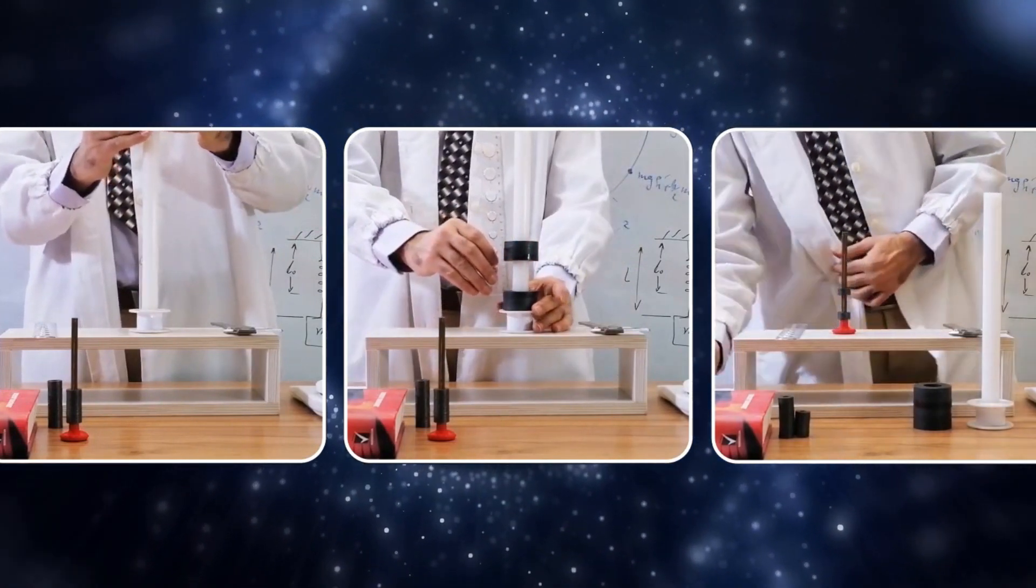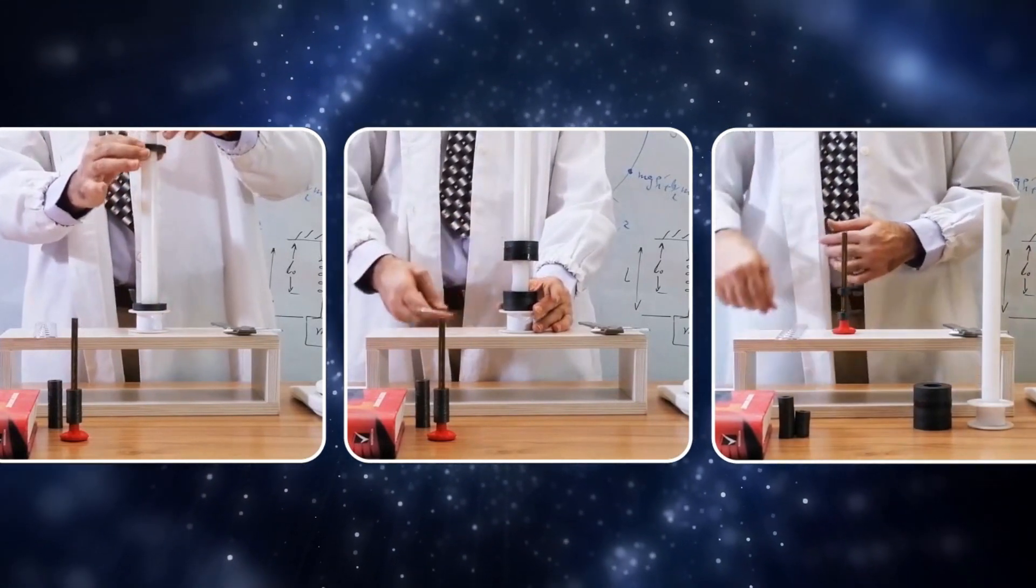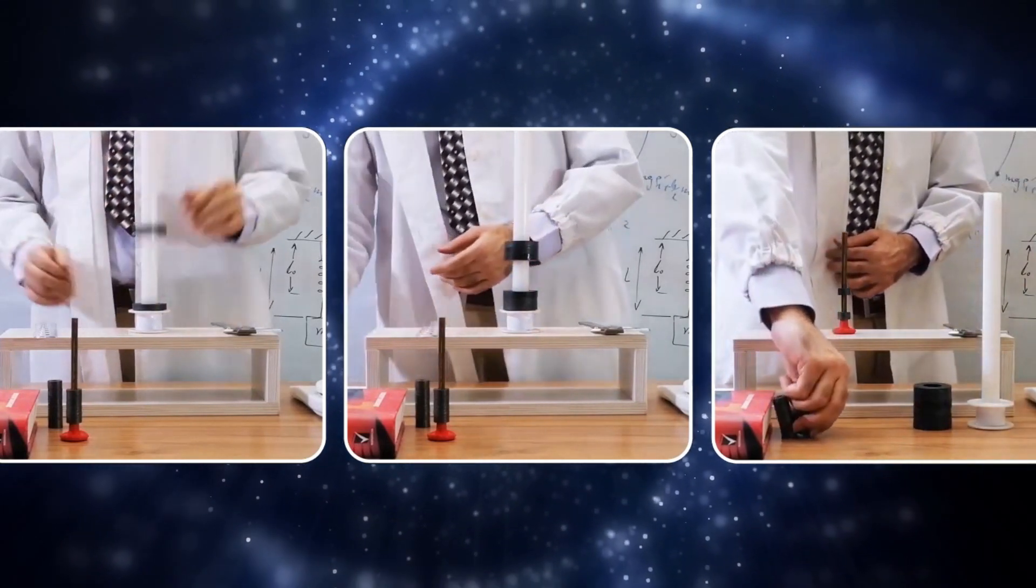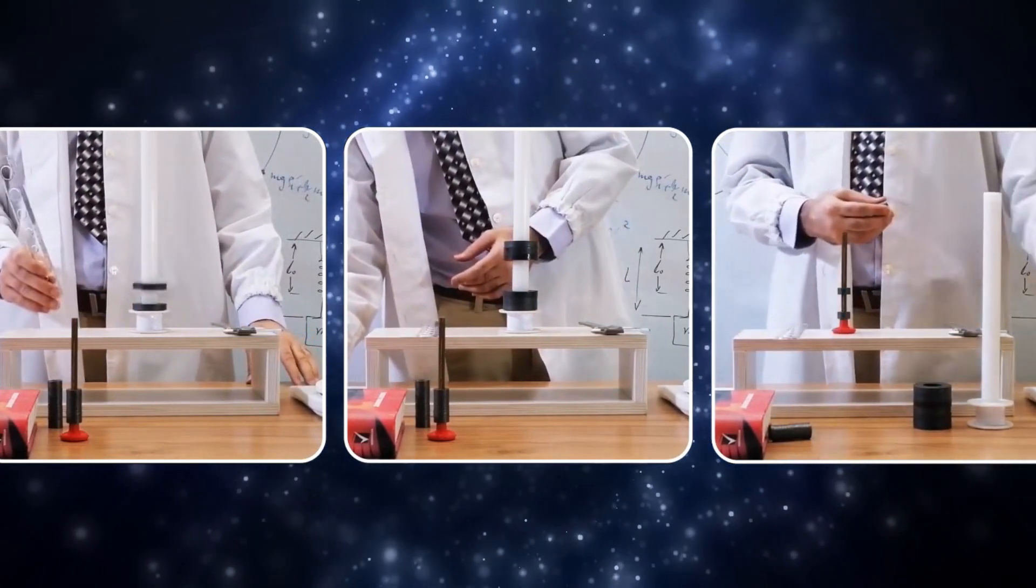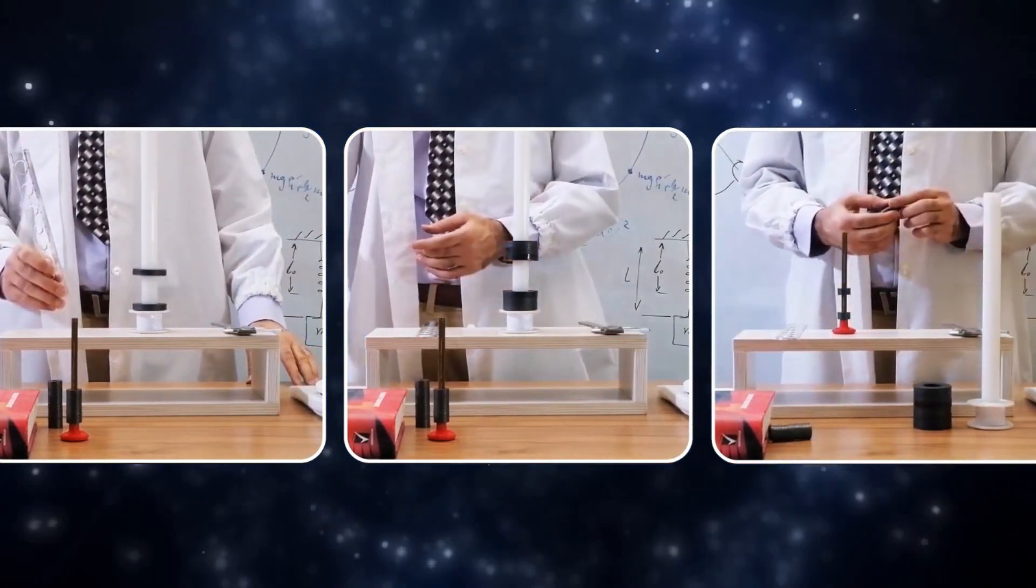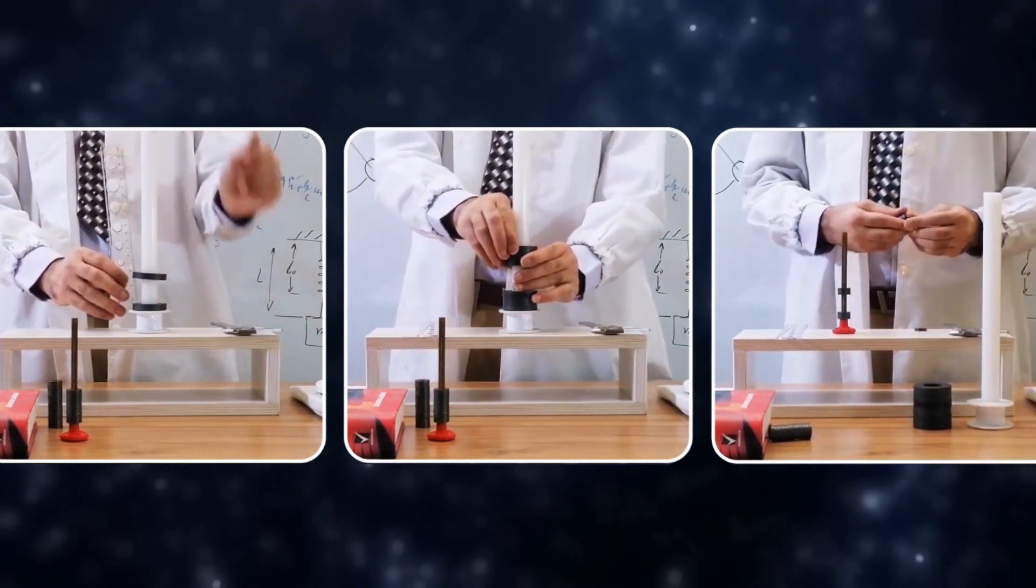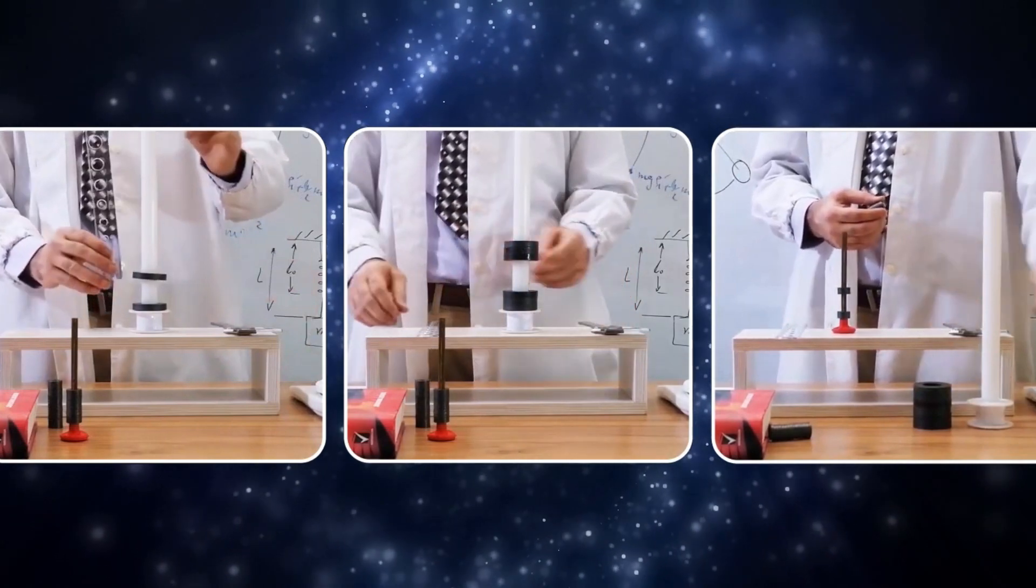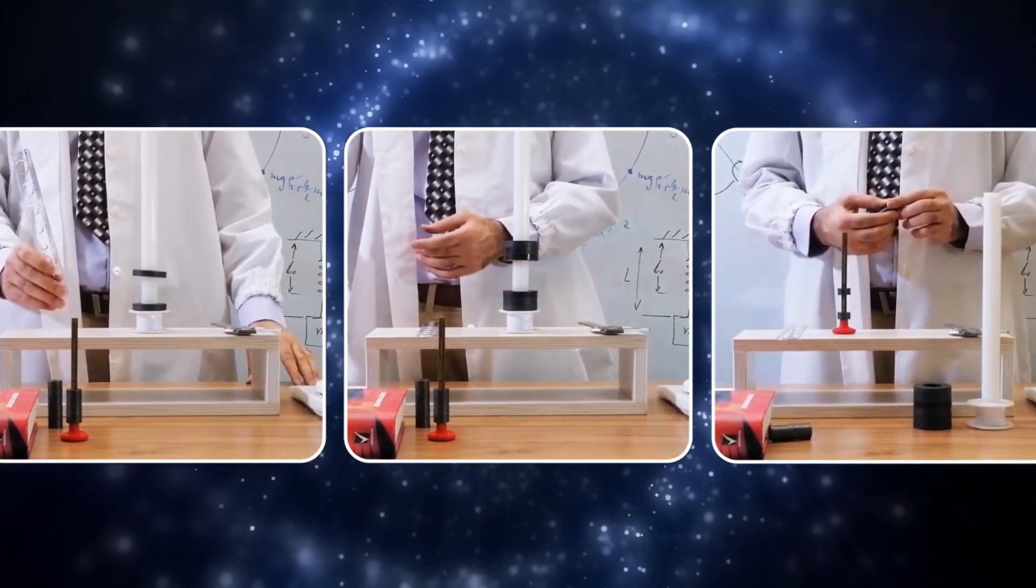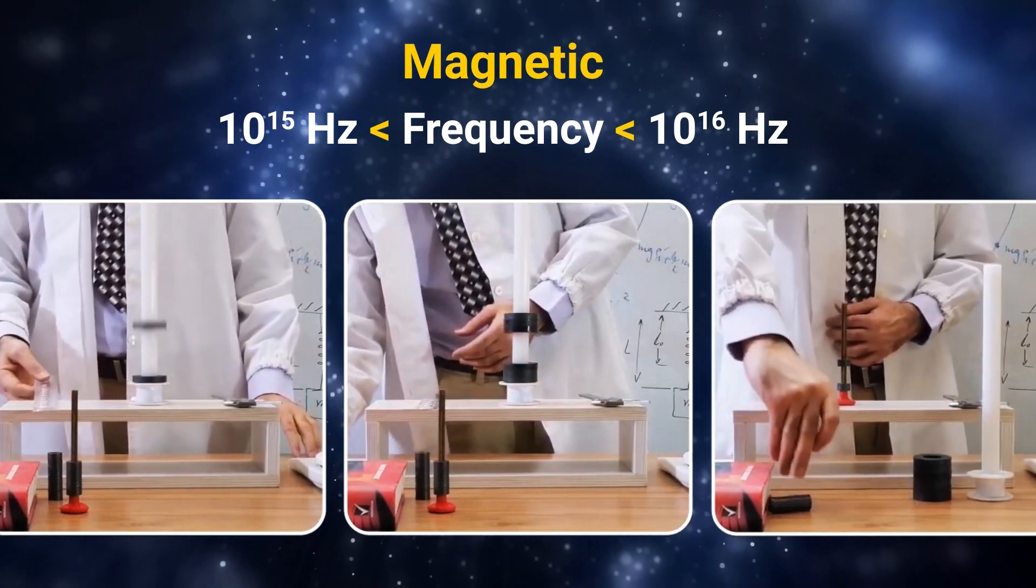By using two completely similar magnets and equating the gravitational potential energy to the energy derived from Planck's energy formula, where the coefficient n represents the number of fluxes passing through each magnet, we have calculated the frequency of magnetic waves. We have found that the frequency range of these waves is between 10 to the power of 15 Hz to 10 to the power of 16 Hz. To calculate the frequency of the magnetic field, we use the following experiment.